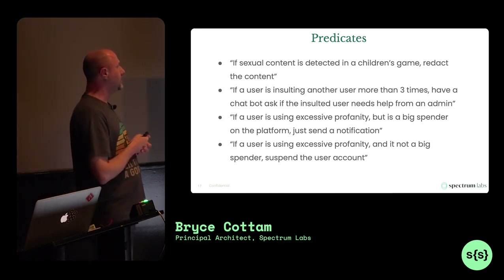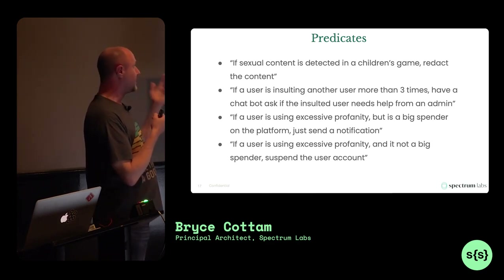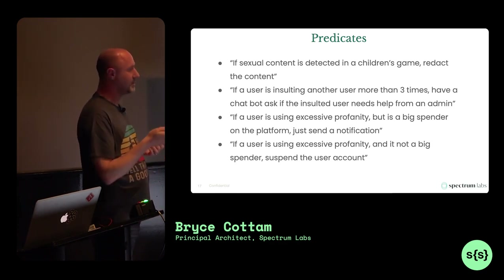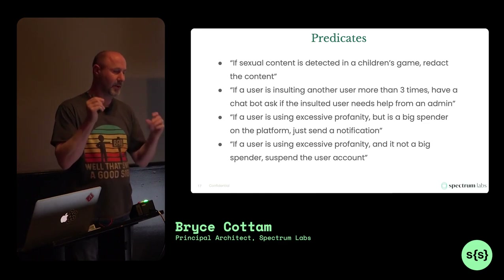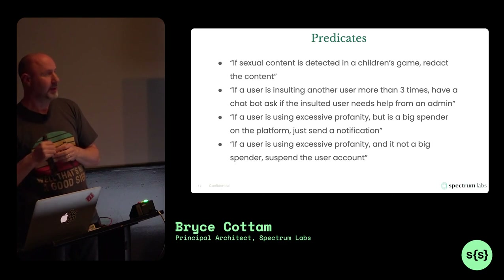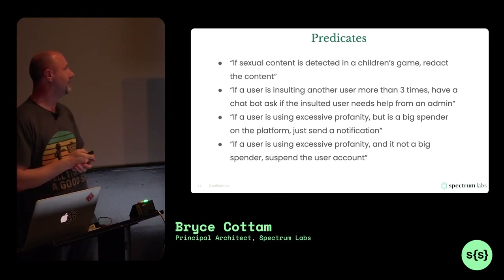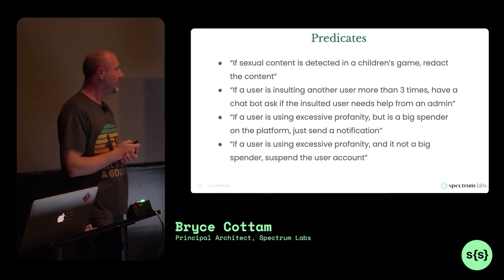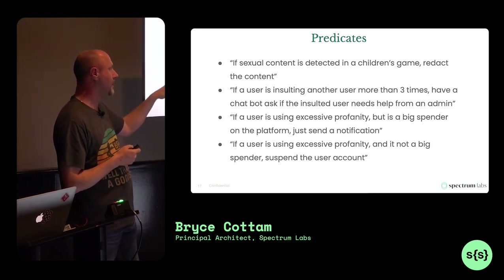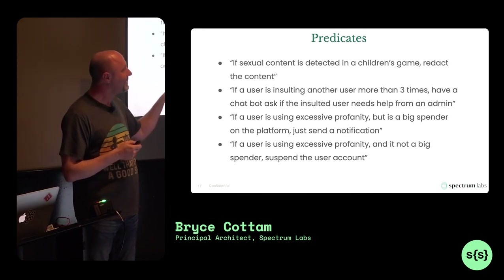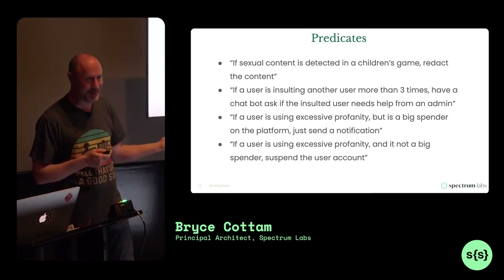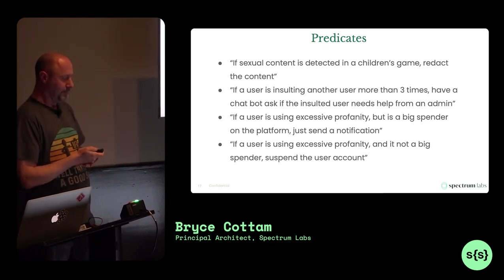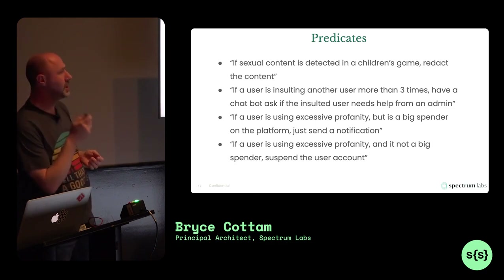Decisions don't always just go off of your detection alone. Semantic examples of conditions include: if sexual content is detected in a children's game, redact the content; or if a user is repeatedly harassing someone, rather than going after the harasser, prompt the target to ask if they want help. Interestingly, we actually have a client where if someone is demonstrating bad behavior but spends a lot on the platform, you just give them a notification — whereas if someone else does the exact same thing but spends little, you kick them out. All of these take more signal than just the prediction from your classifier.